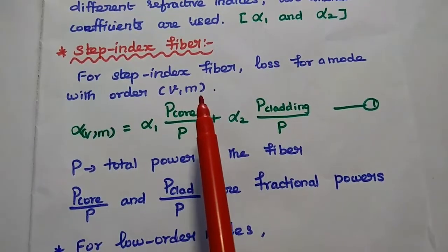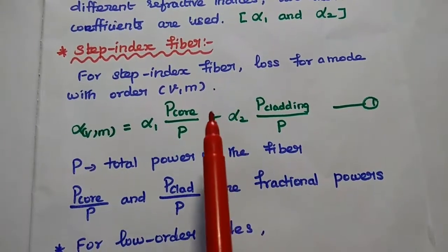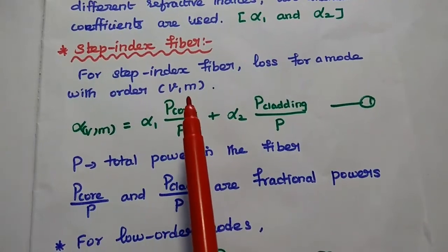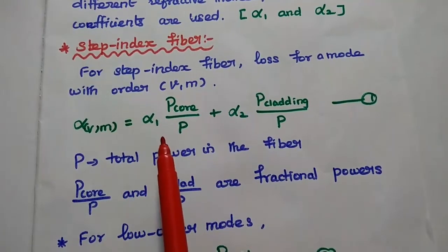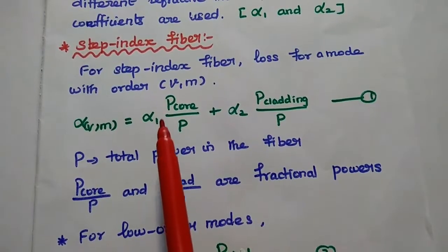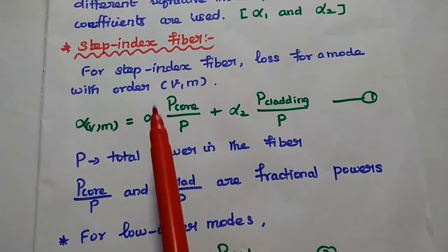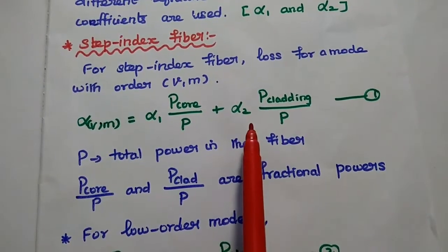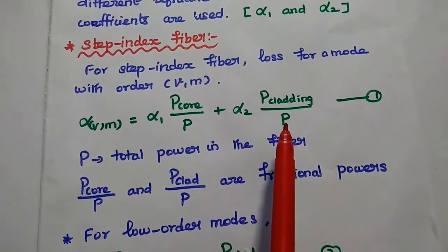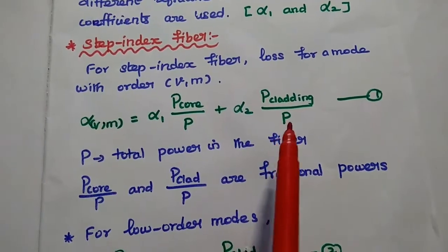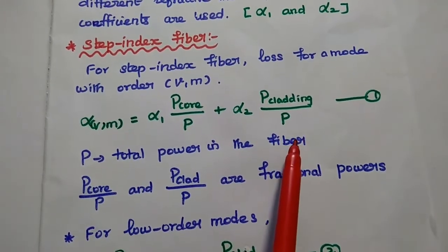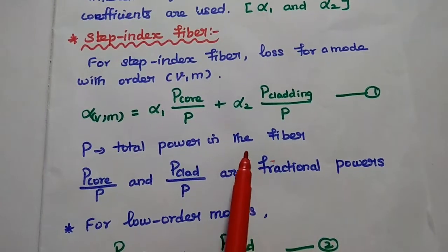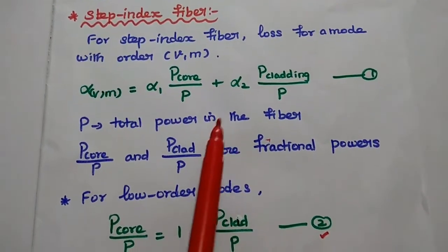For step index fiber, the loss for a mode with order V, M — where V is the frequency and M is the mode number — is given as alpha1 times P_core divided by P, that is the fractional power of the core, plus alpha2 times P_cladding divided by P. Here P is the total power in the fiber, and P_core/P and P_cladding/P are both the fractional powers in the optical cable.